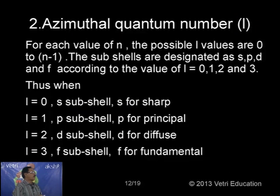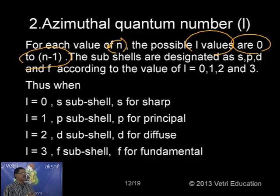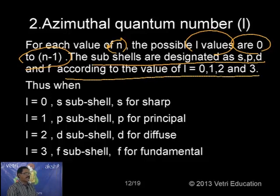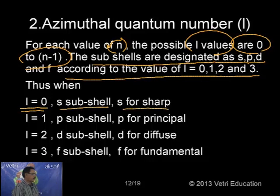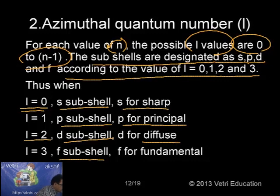For each value of n, the possible values of l are 0 to n−1. The subshells are designated as S (l=0), P (l=1), D (l=2), and F (l=3). S stands for sharp, P for principal, D for diffuse, and F for fundamental. If you know n, you can immediately calculate l values.